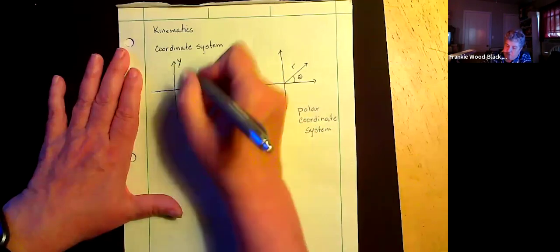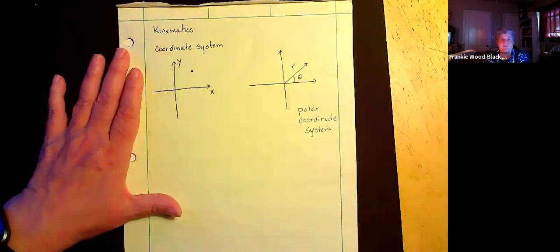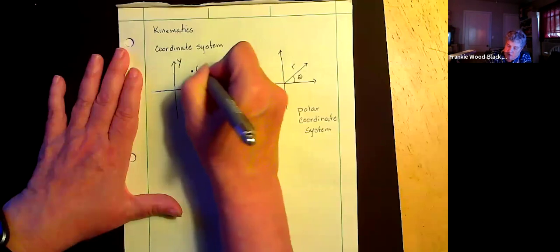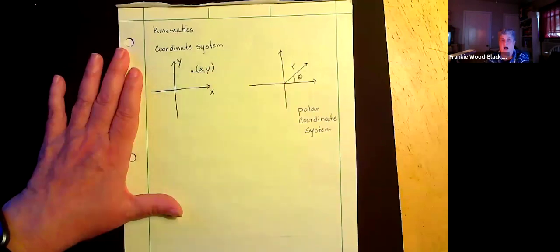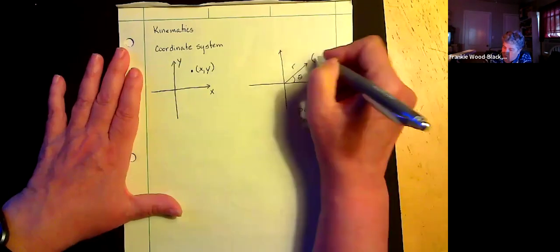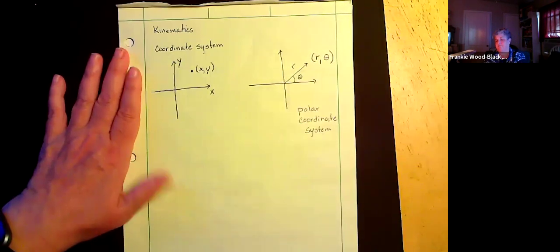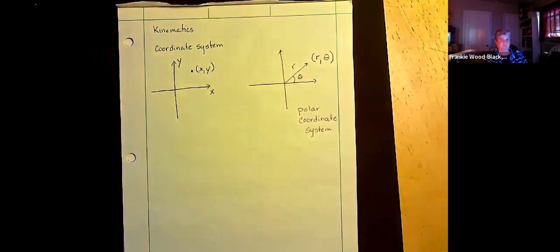And we've done this before, so if I'm describing a point here in space, we know that I can describe it by its position in the x and its position in the y in our coordinate system. And if I'm over here in my polar coordinate system, I can describe it as an r at an angle.